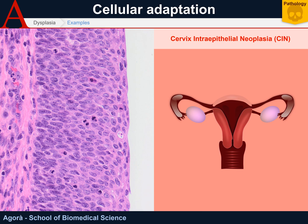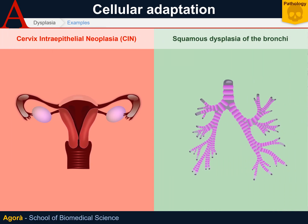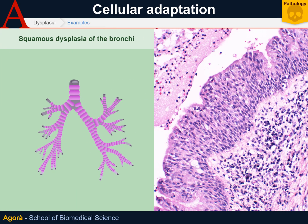In the same way, squamous dysplasia of the bronchi, developing in a pre-existing squamous metaplasia, manifests with a tissue de-differentiation. The most undifferentiated epithelial cells, similar to basal cells, do not form in the lower layer but go up to over half of the epithelium.